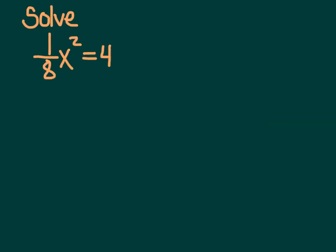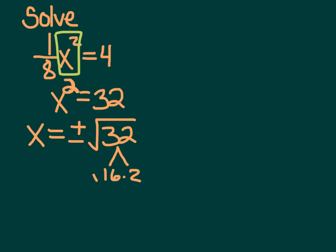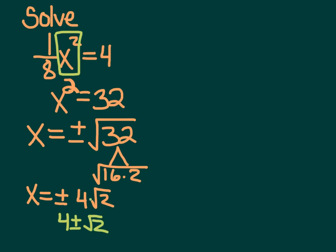Now that we know how to take and simplify square roots and handle negatives, let's solve quadratic equations. Here's a basic one with just X squared. We isolate X squared by multiplying both sides by 8 — 4 times 8 is 32. Then take the square root of both sides; when we create the radical sign, we use plus or minus. So X equals plus or minus the square root of 32. Since 32 is 16 times 2, X equals plus or minus 4 root 2. Don't write 4 plus or minus root 2 — that's different. The whole thing comes after the plus or minus.